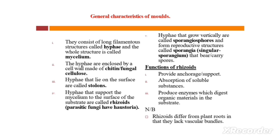The cell wall is made up of chitin — that is, a fungal cellulose. The hyphae that lie on the surface are called stolons. Another characteristic: hyphae that support the mycelium to the surface of the substrate are called rhizoids.